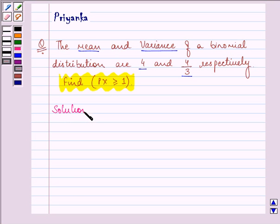Now here, first let us write down the given values. We are given mean, that is n into p as 4, and we are given variance, that is n into p into q as 4 by 3.